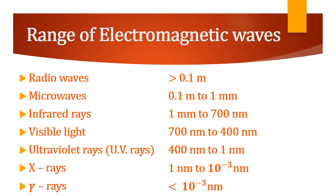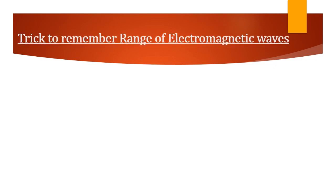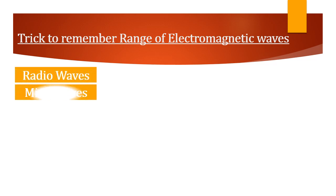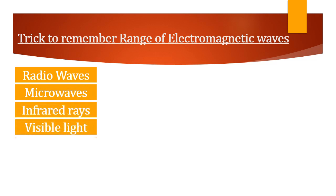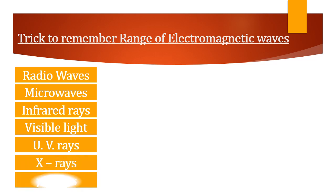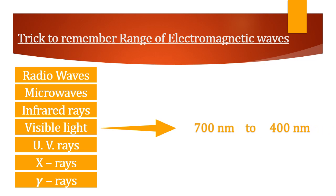This is the range of electromagnetic waves in terms of their wavelength. Now, here we are going to use a simple trick to remember the range of electromagnetic waves. Out of the 7 waves, we are generally aware of the range of visible light, which is from 700 nanometer to 400 nanometer. We take 400 nanometer from visible light and move it towards UV rays, and 700 nanometer moves upward towards infrared rays. So we get 700 nanometer for infrared rays and 400 nanometer for UV rays.